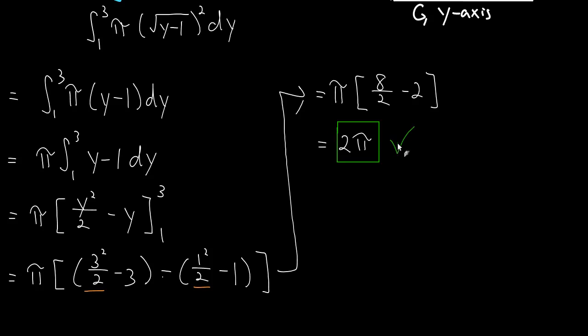The volume of the solid of revolution is 2pi. In future videos we'll learn the washer method and shell method, and then move on to harder problems where we have to set up the problem ourselves and decide which method to use.